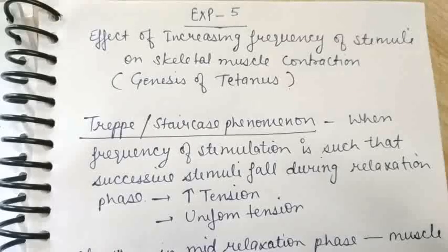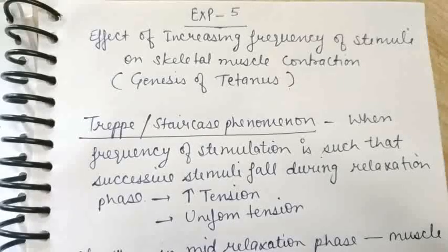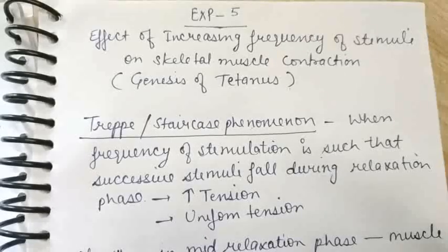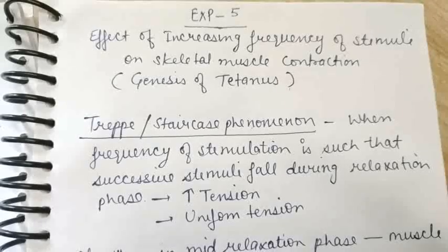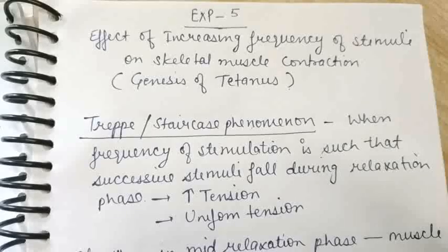If you remember, we have seen in one video the effect of two successive stimuli — if we give a second stimulus, what happens to the graph of the first stimulus. Whether one stimulation is over or in between we give a second stimulation, what was the effect? We came to know what the response was during the latent period, contraction period, and relaxation period. Here we'll try to elaborate further — if we increase the number of stimulation instead of two.